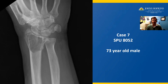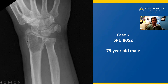Case number seven is from a 73-year-old male. Here we have a lytic and expansile mass in the distal radius extending to the articular surface and is centered in the epiphysis of this long bone. The mass has a well-defined but non-sclerotic and narrow zone of transition proximally. The mass remodels and expands the cortex but does not destroy the cortex.